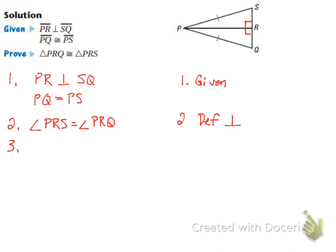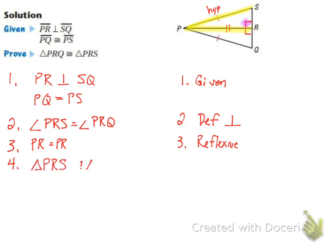Next, looking at the picture, PR equals PR by the reflexive property. Now we have an angle and two sides, but the angle is not between the sides, so this would be angle-side-side, which we can't use. That tells us we need hypotenuse leg. PS is the hypotenuse and PR is the leg. So the fourth step is to state that triangle PRS and triangle PRQ are right triangles.